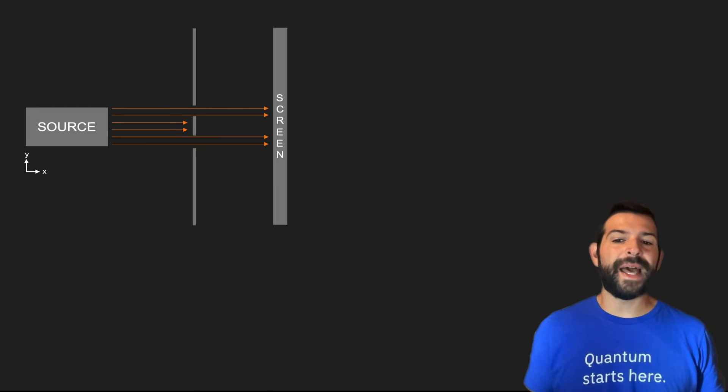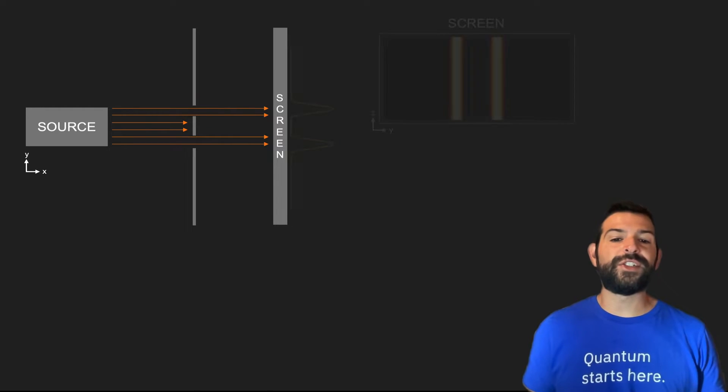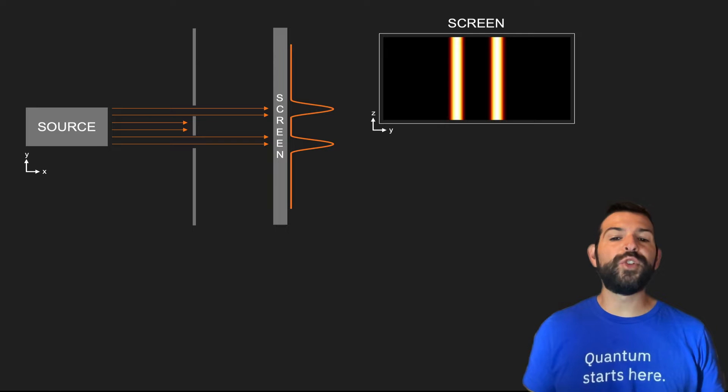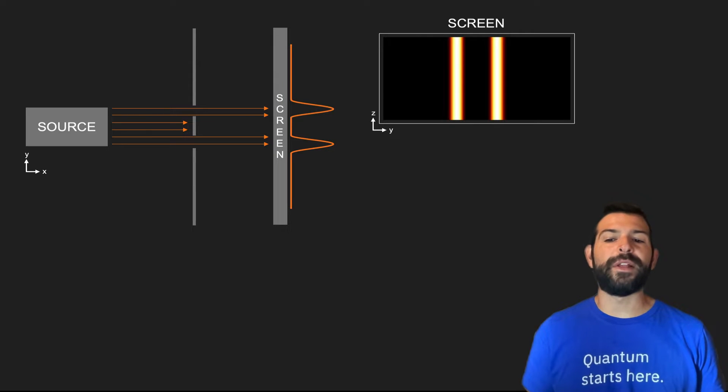If light is made out of particles traveling in straight paths, all we should see at the screen are two well-defined bands right where the light passes through.